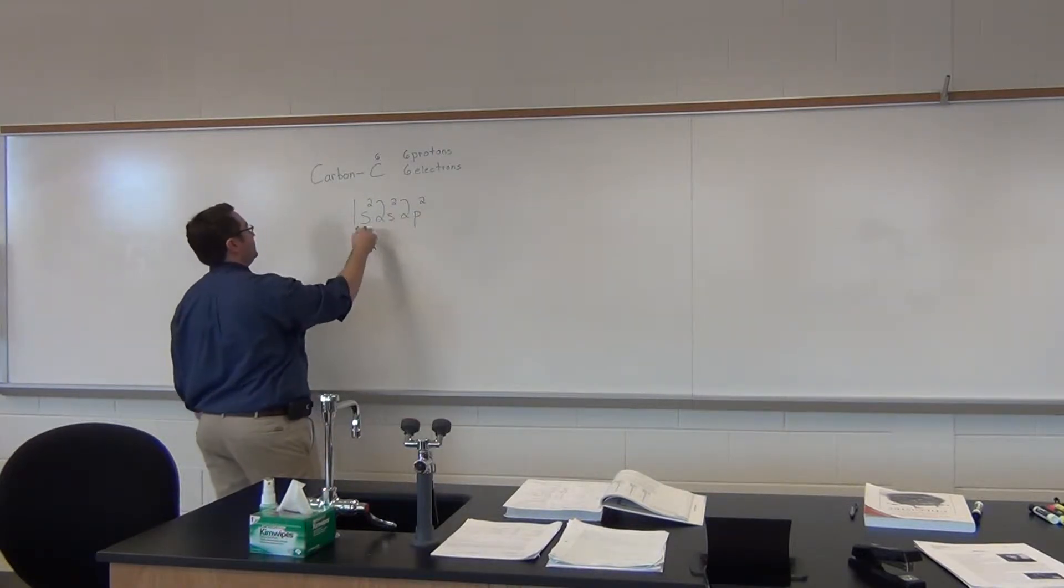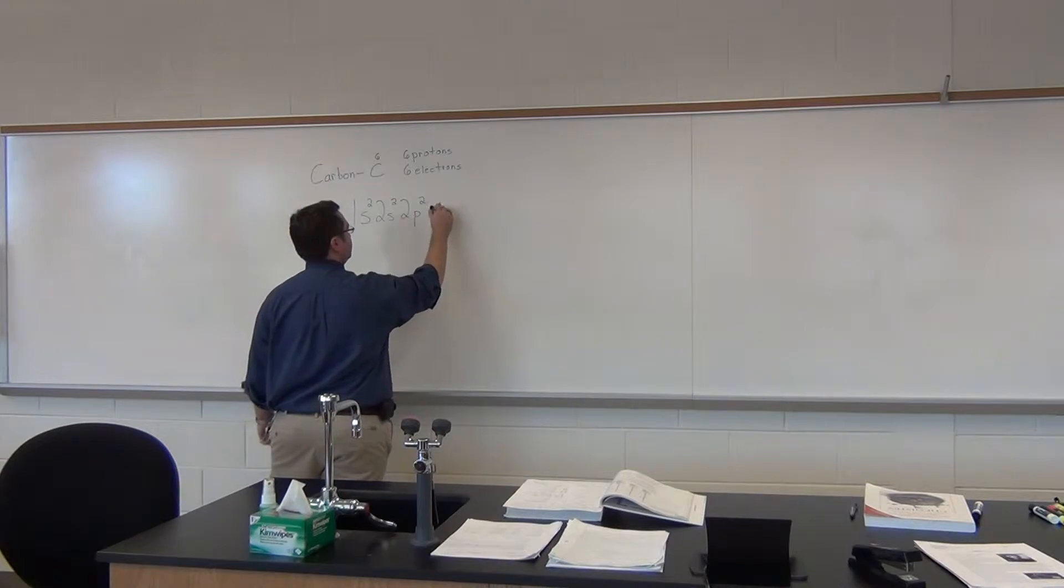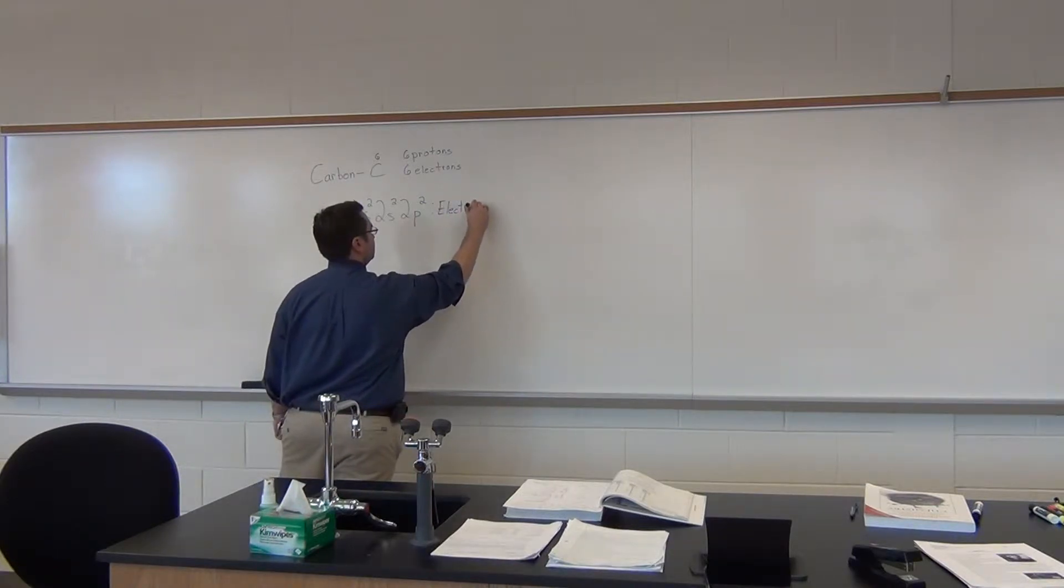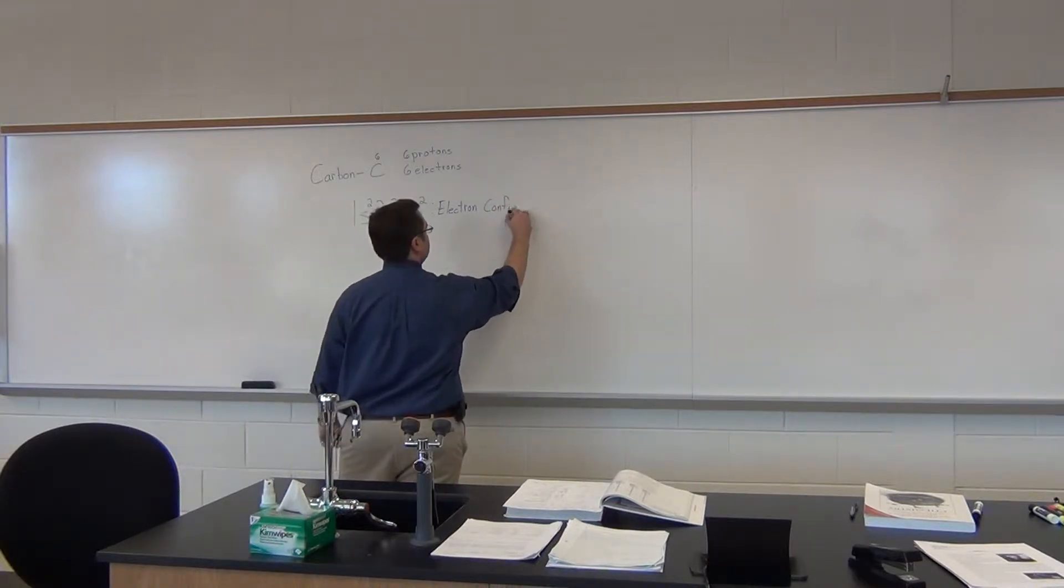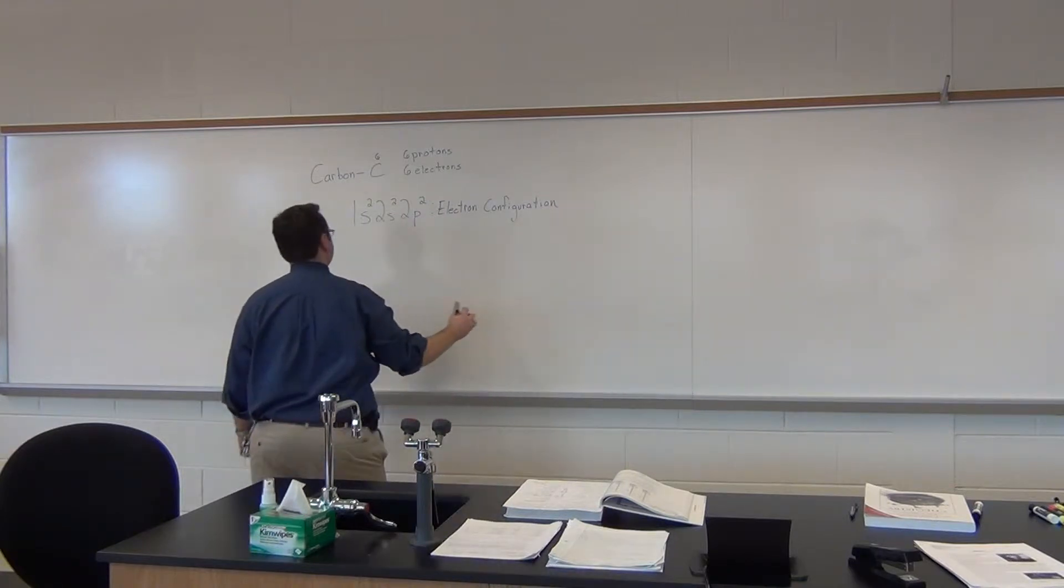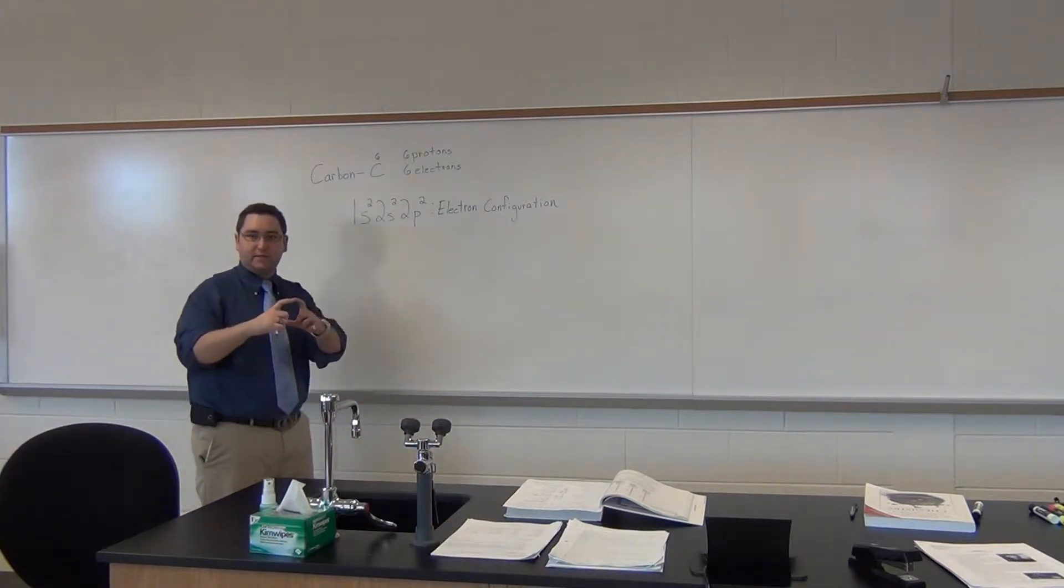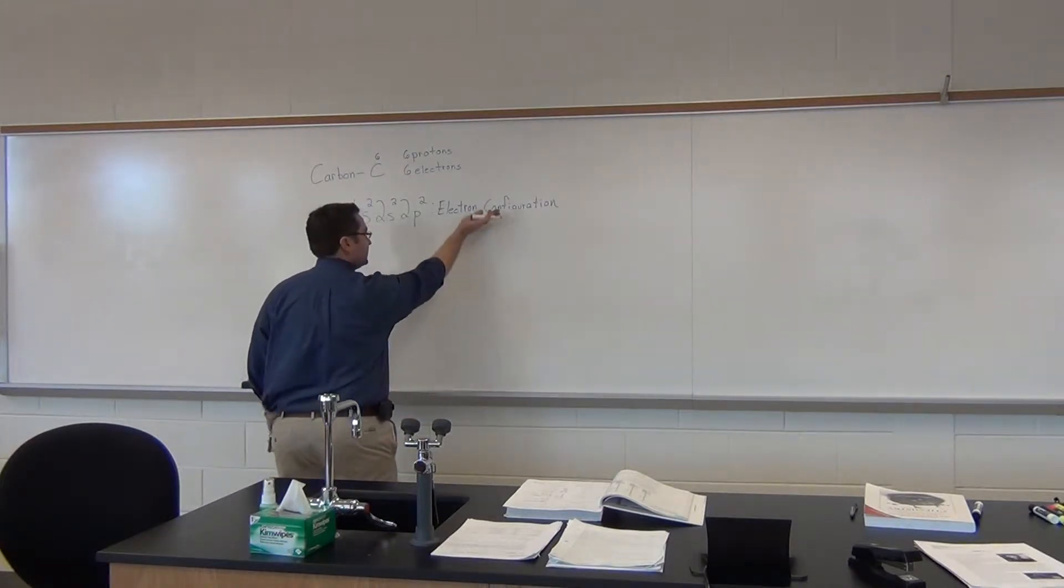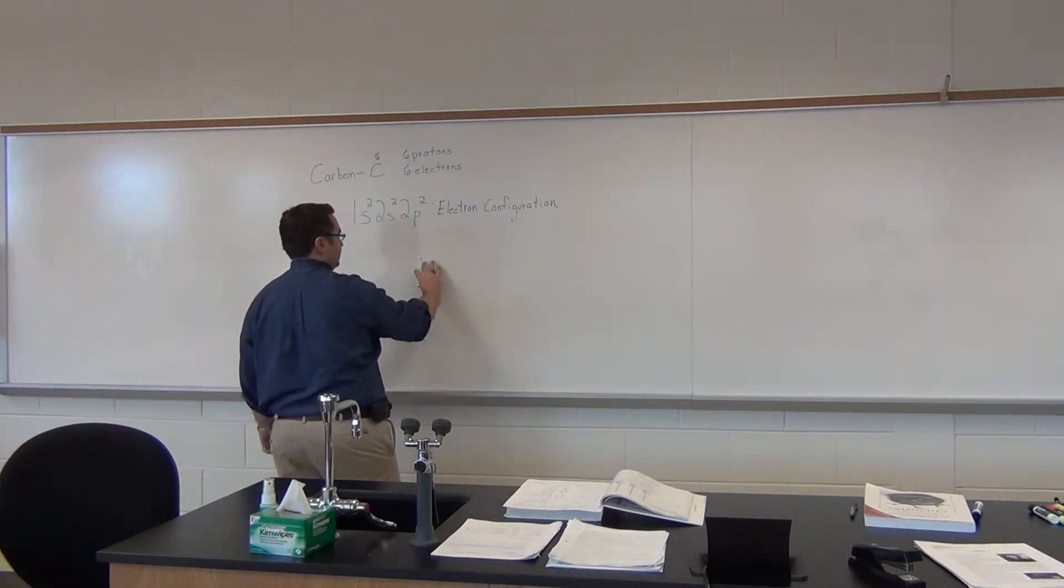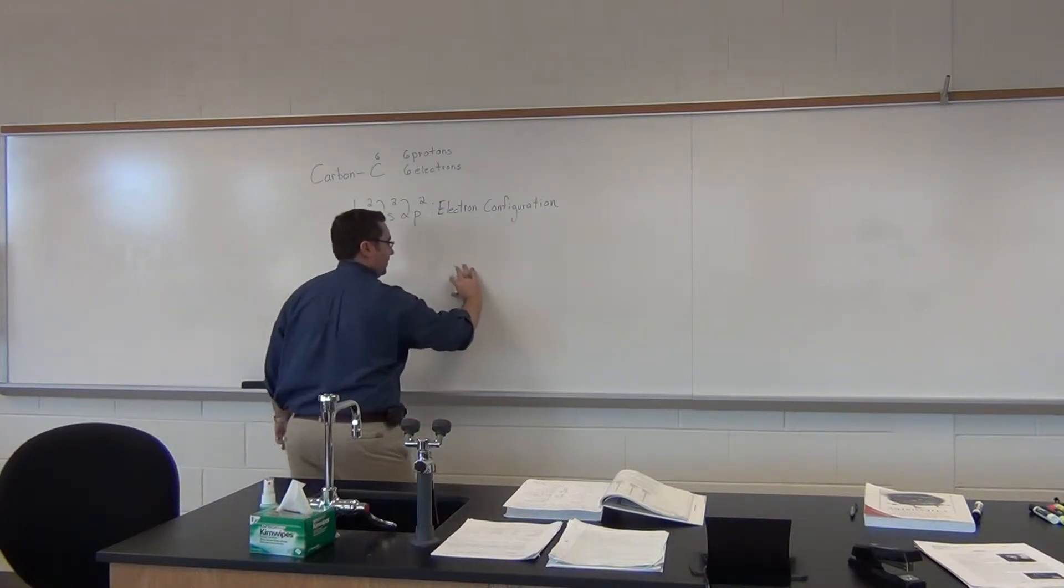This is your electron configuration. Now if you're asked to do an orbital diagram, this is where you have your boxes. So you start and you can increase upward - it's easiest to go upward. You can go across, but if you try to think about it like a graph.